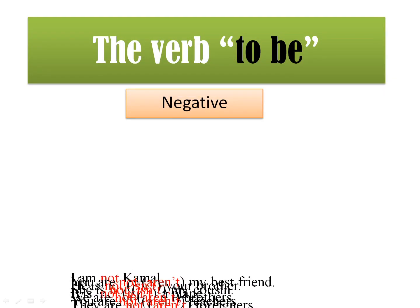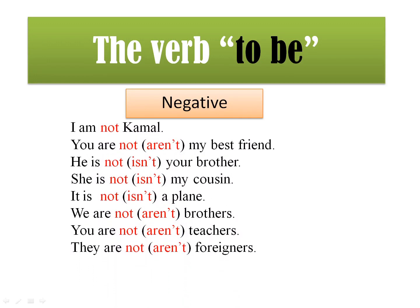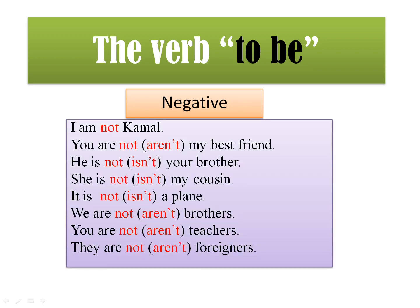Now let's move to the verb 'to be' in the negative form. When you want to put the verb 'to be' in the negative, you just add 'not'. For example: I am not Kamal. You are not my best friend, or you aren't. He is not, or he isn't, your brother. She is not my cousin. It is not a plane. We aren't brothers. They are not foreigners. The difference between the full form and the contracted form is emphasis — when you say 'I am not', you are showing determination.